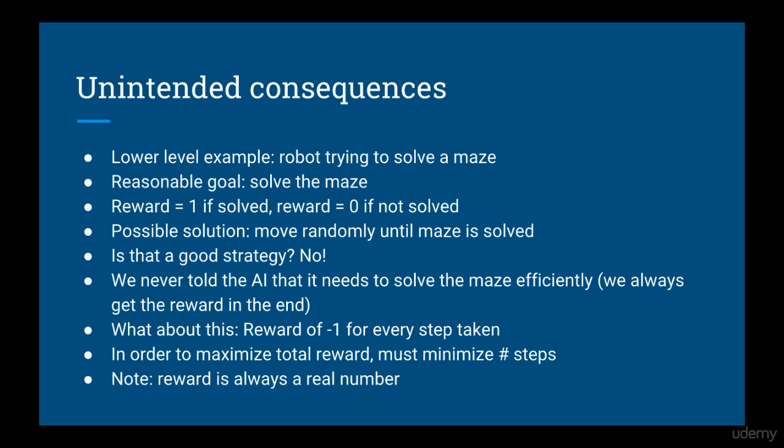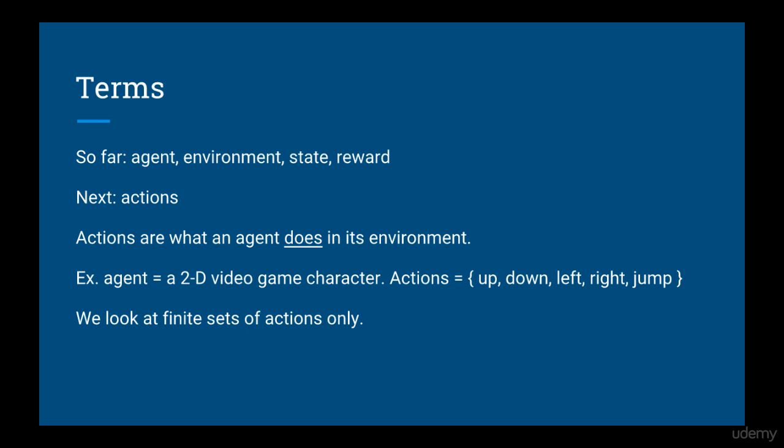We'll demonstrate this in code later in the course. Notice how a negative reward is like a penalty — reward is just the term we always use, and it tells you how good or bad you're doing. Note that the reward is always a real number. So now we've defined these terms: agent, environment, state, and reward.